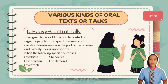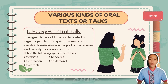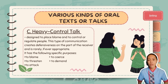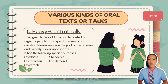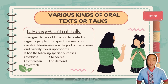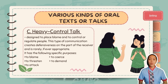The third kind is heavy control talk. In contrast with light control talk, heavy control talk is designed to place blame and to control or regulate people. This type of communication creates defensiveness on the part of the receiver and is rarely appropriate. It can be associated with the word tactlessness — the lack of consideration for how somebody else would feel. Tactlessness can manifest in using offensive language and refusing to be sensitive to someone's feelings. Heavy control talk has the specific purposes of blaming, threatening, attacking, coercing, and demanding.